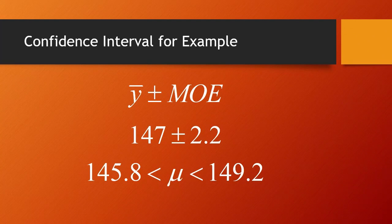Wait a second. We calculated that already. We calculated that by testing all possible hypotheses, rejecting some and retaining others, and keeping the retained means to form our confidence interval. What did we just do? We got the exact same result using the margin of error.